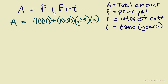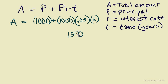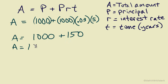We've substituted values into all the variables on the right side of this formula. We'll do order of operations to find the value of A. First, we'll multiply 1,000 times 0.03 times 5. Multiplying 1,000 times 0.03 gives us $30, which is the amount of interest for each year. Over 5 years, that's a total of $150 in interest. Adding that back into our original principal of $1,000, we get A equals $1,150.